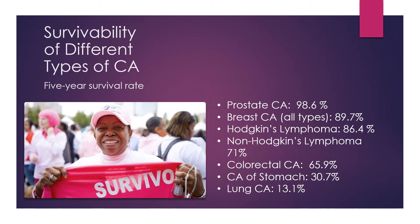Here we see the five-year survival rates of the top few most common types of cancer. Prostate is the most survivable, probably because most types are fairly slow-growing and well-encapsulated within the prostate gland. Breast cancer has a five-year survival rate of almost 90%, partly because the medical community has become very good at treating it. Hodgkin's lymphoma and non-Hodgkin's lymphoma have higher rates; colorectal cancer drops to about two-thirds; cancer of the stomach is more ominous. The five-year survival rate for lung cancer is only 13%.